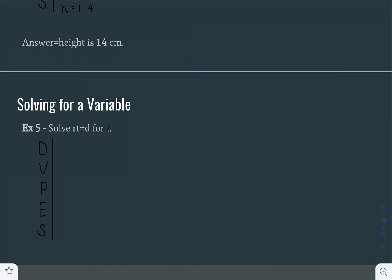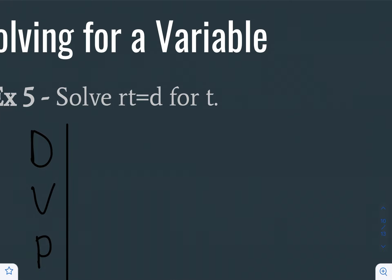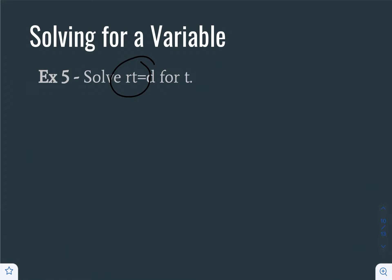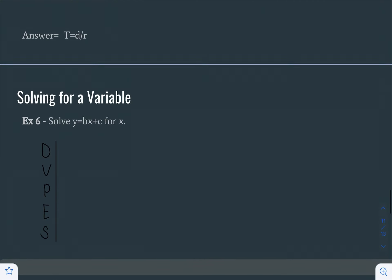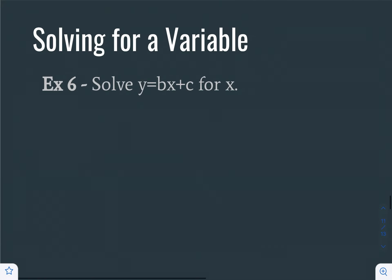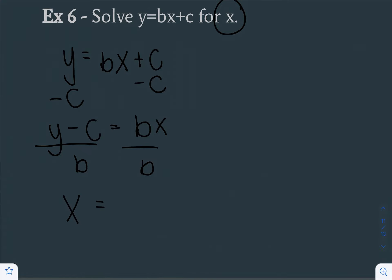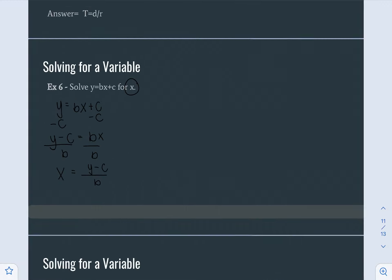When solving for a variable, it's sometimes requested that you solve the formula for a specific variable. That simply means getting the variable by itself using the same principles as before — we don't really need to use the full DVPE process. For example, if we have RT equals D and we're solving for T, we divide both sides by R and get T equals D divided by R. Similarly, if y equals bx plus c and we're solving for x, we subtract c from both sides to get y minus c equals bx, then divide both sides by b, giving x equals y minus c divided by b.